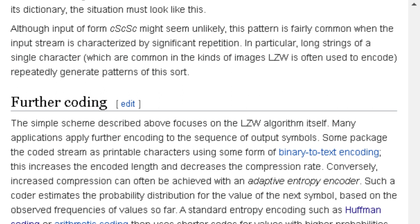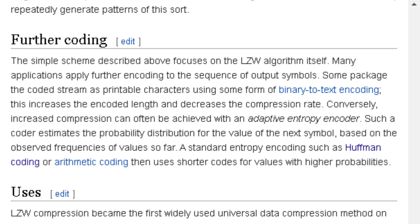Further coding: The simple scheme described above focuses on the LZW algorithm itself. Many applications apply further encoding to the sequence of output symbols. Some package the coded stream as printable characters using some form of binary to text encoding. This increases the encoded length and decreases the compression rate. Conversely, increased compression can often be achieved with an adaptive entropy encoder. Such a coder estimates the probability distribution for the value of the next symbol based on the observed frequencies of values so far. A standard entropy encoding, such as Huffman coding or arithmetic encoding, then uses shorter codes for values with higher probabilities.